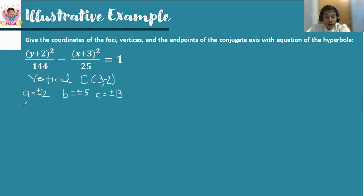For our endpoints of the transverse axis, b sub 1 and b sub 2 — the vertices — we follow the formula h, k plus or minus a. So we retain the h value, negative 3. With reference to a, we add it to the k value: negative 2 minus 12 and negative 2 plus 12. So negative 2 minus 12 is negative 14, and negative 2 plus 12 is positive 10.